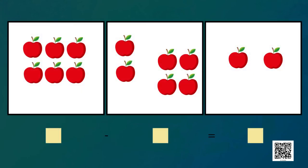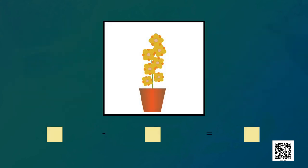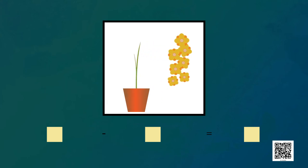Next we have some apples — count and write the total in the first box, then count how many are taken away and write that in the second box, and write what's left in the last box. Six minus four is equal to two. Moving further — this pot has seven flowers. Count them and write seven in the first box. All the flowers have been taken away, so write seven in the next box also.